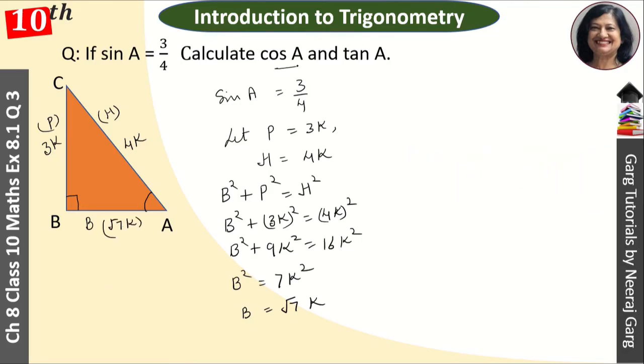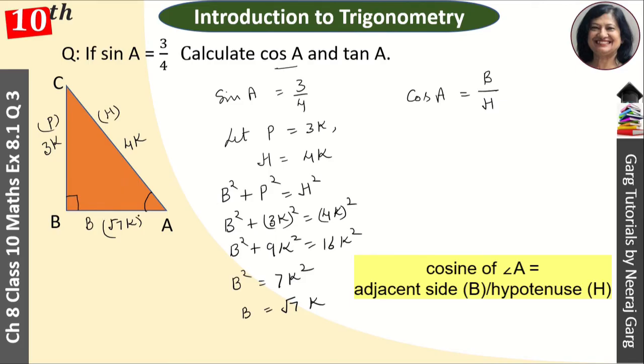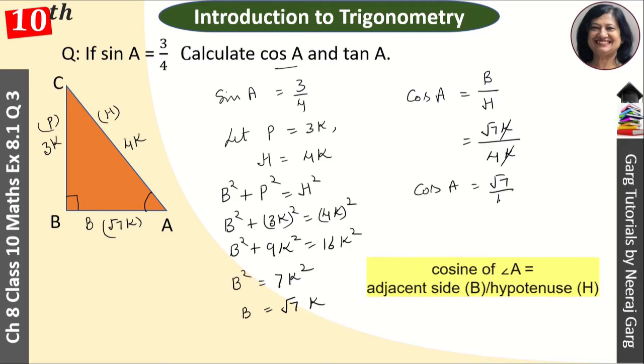Now we need to find cos A. Cos A equals adjacent side upon hypotenuse, which is base upon hypotenuse. The adjacent side is root 7K and hypotenuse is 4K. So cos A equals root 7K upon 4K. Canceling K, we get cos A equals root 7 upon 4.